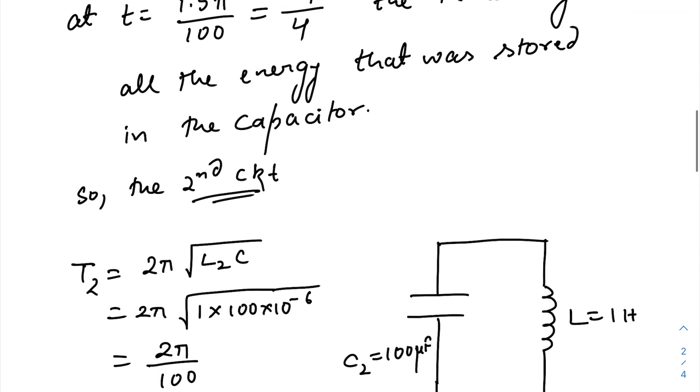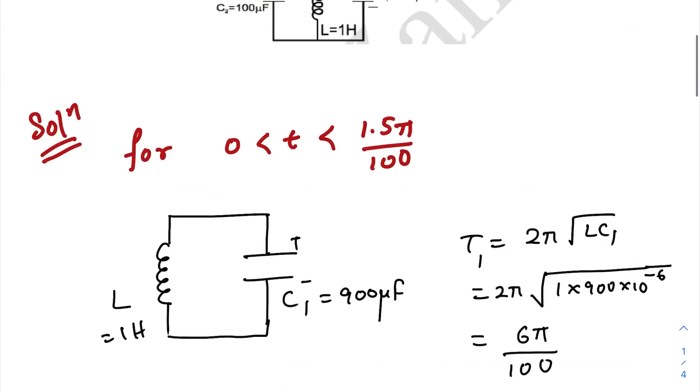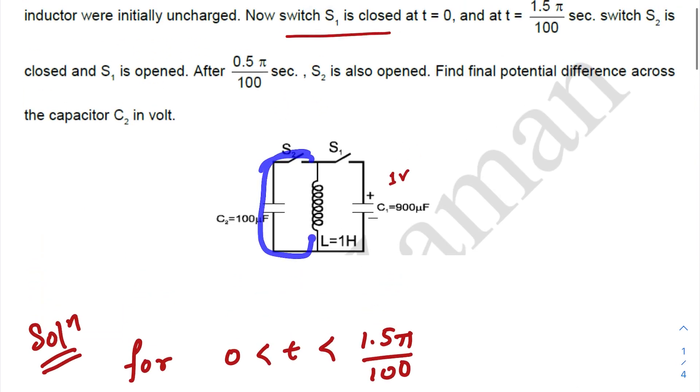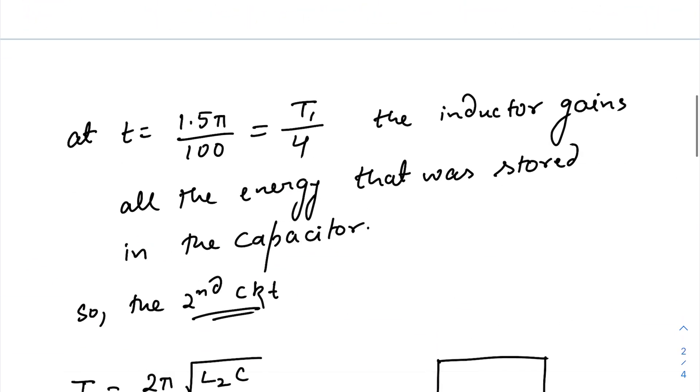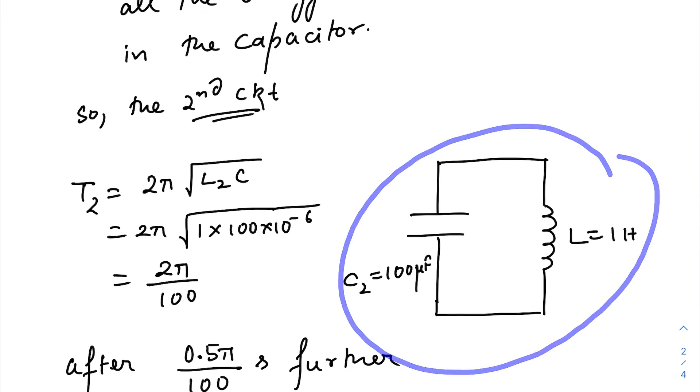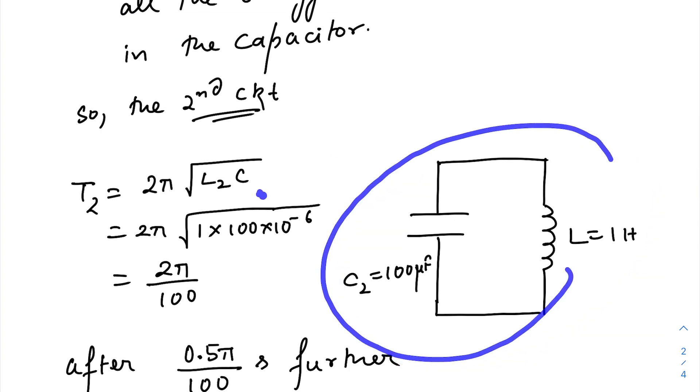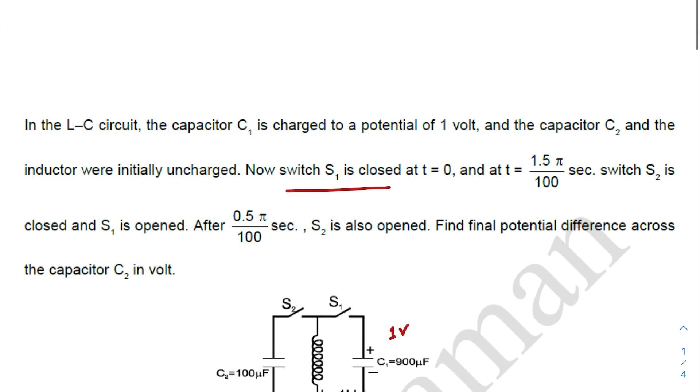Second, switch S2 is closed and S1 is opened. Now we are getting this as our working LC circuit. Okay, this one. So for this circuit, the time period is 2π√(L2C) and we will get this one, right? So this is the time period.